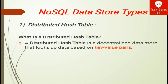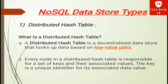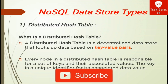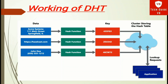A distributed hash table (DHT) is a decentralized data store that looks up data based on key-value pairs. Every node in a DHT is responsible for a set of keys and their associated values. The key is a unique identifier for its associated data value. The data value can be any form of data. Whatever key is created in a DHT, it is created through a hashing function.